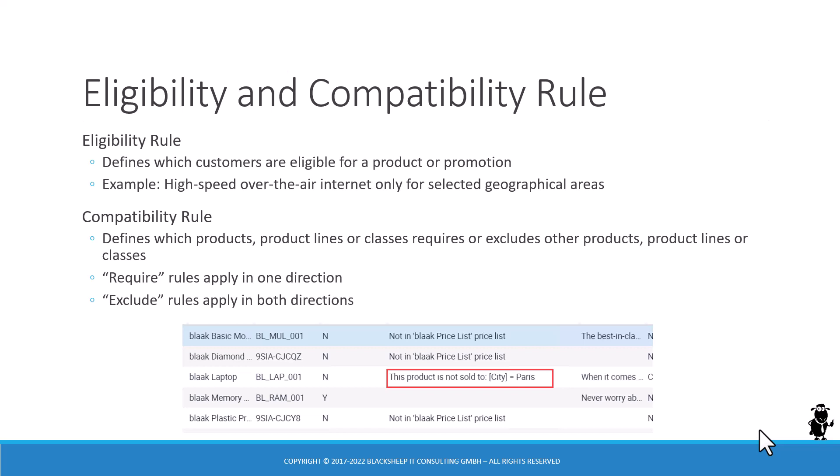Similarly, sometimes there's a problem of compatibility. For example, I have already purchased a particular model of car, and now I want to buy a particular model of roof rack to put on top of it. The roof rack I've chosen is not compatible with the car I have. With compatibility we're talking about products — is this product compatible with this product? We often say this product excludes this product, or this product requires this product, so compatibility is always focused on products. Eligibility focuses on whether the customer is eligible to purchase a product or promotion.